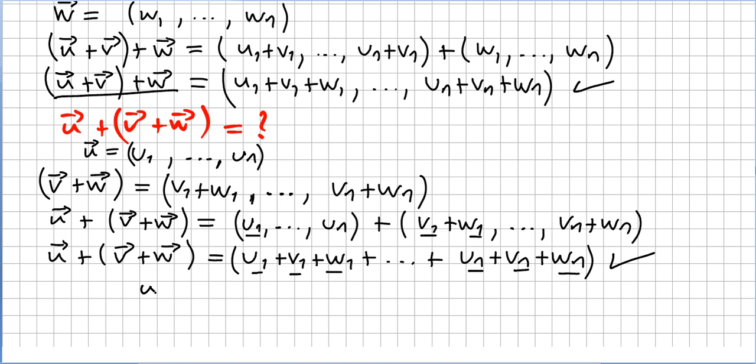So, conclusion: (u plus v) plus w equals u plus (v plus w). So vector addition in a vector space is associative. And that concludes the proof.